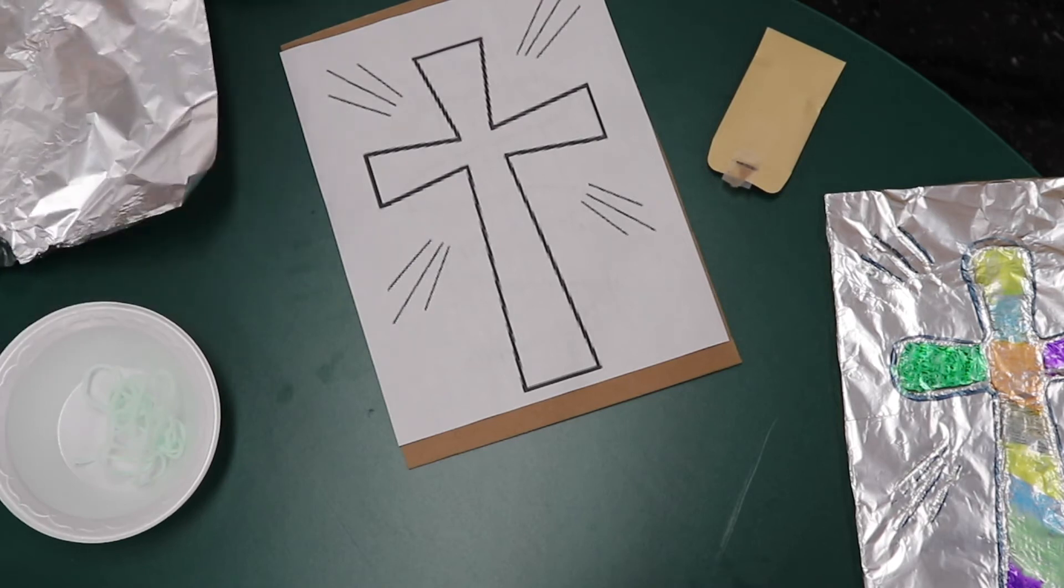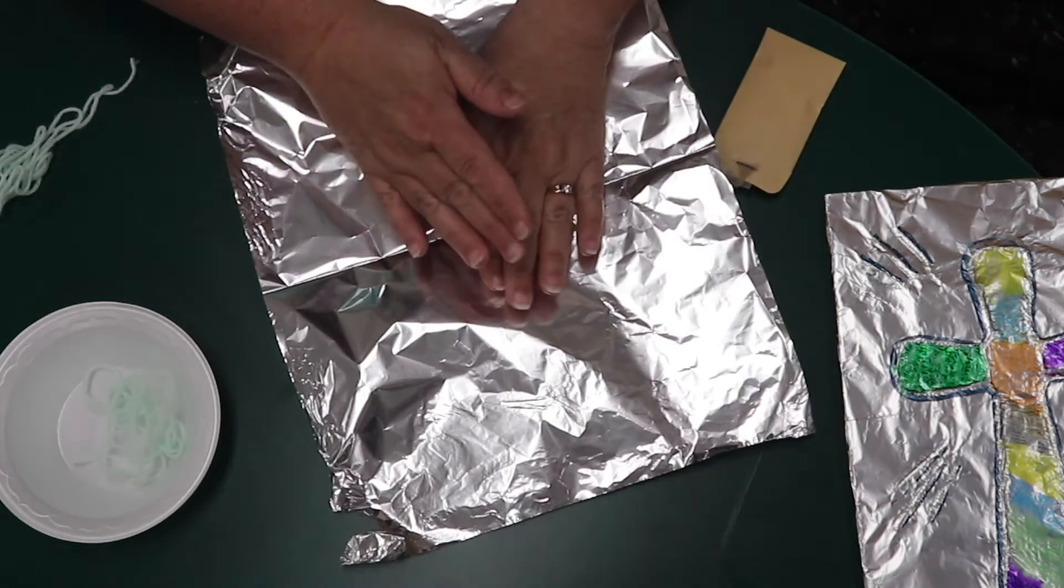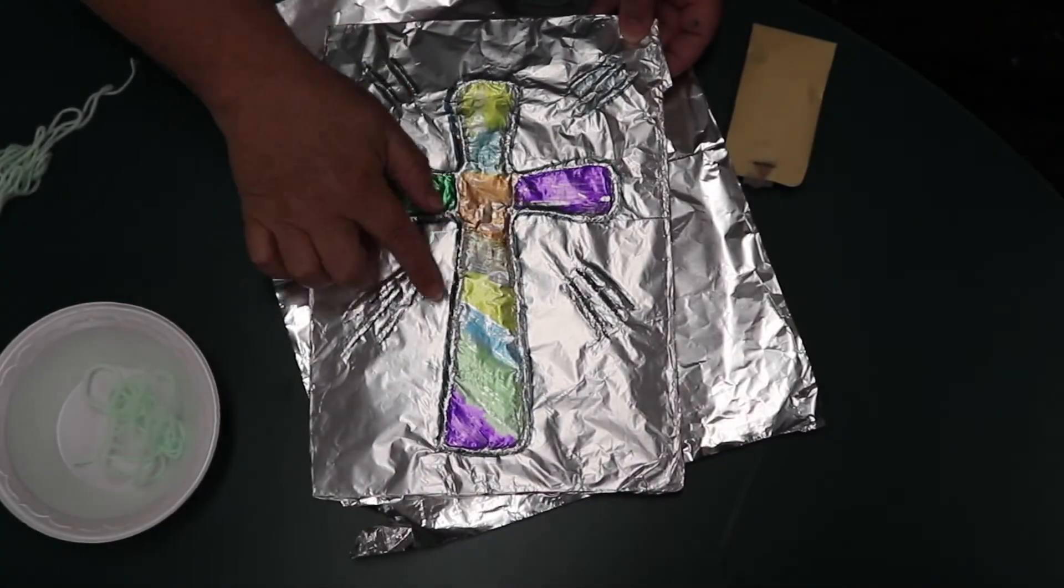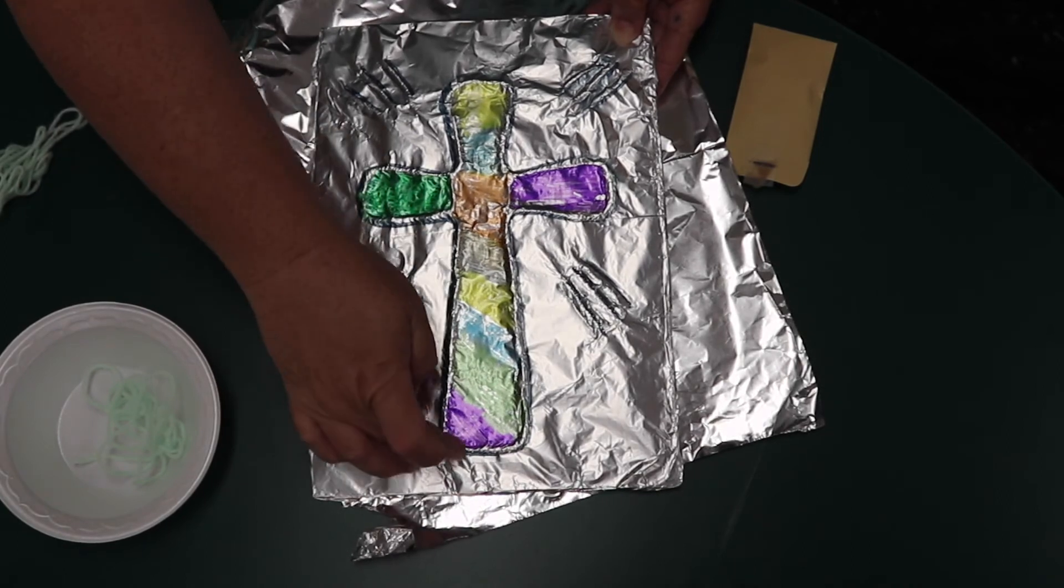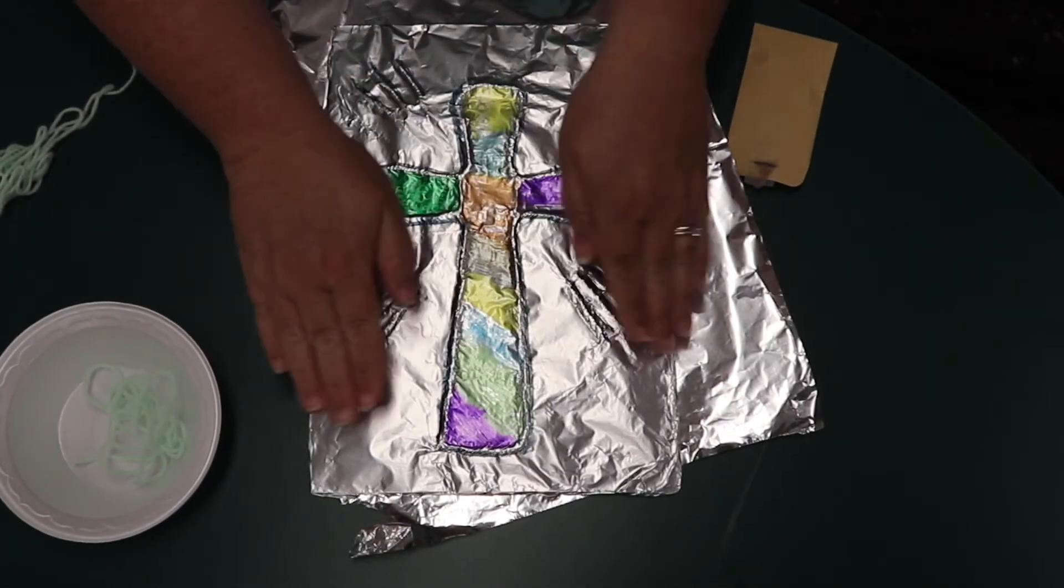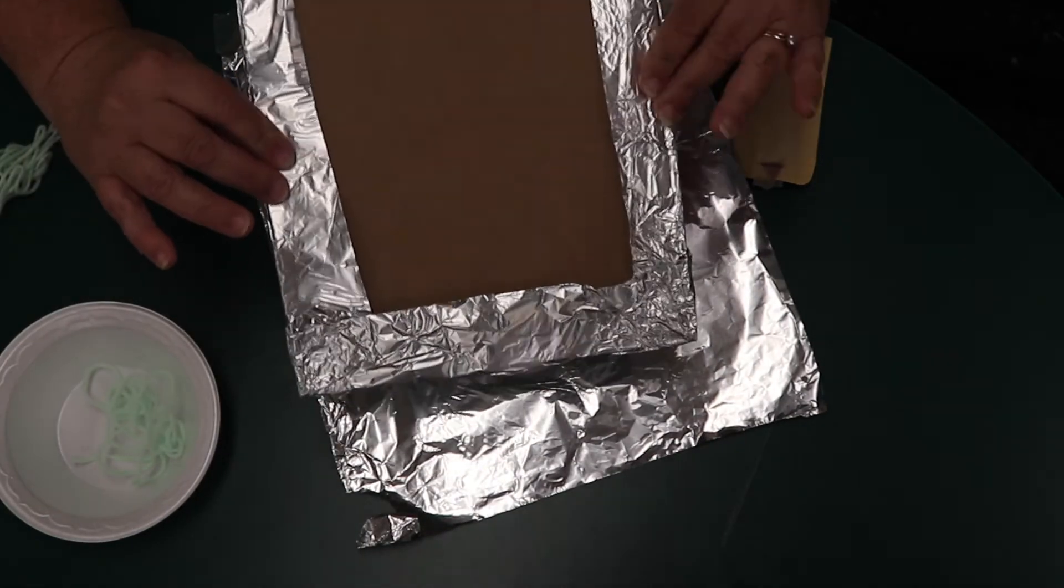You're going to take your tin foil and lay it over the string. I'm going to show you this one again. You're going to push your fingers in and trace the string with your fingers as you put your tin foil on, and then fold the tin foil over the sides of the cardboard.